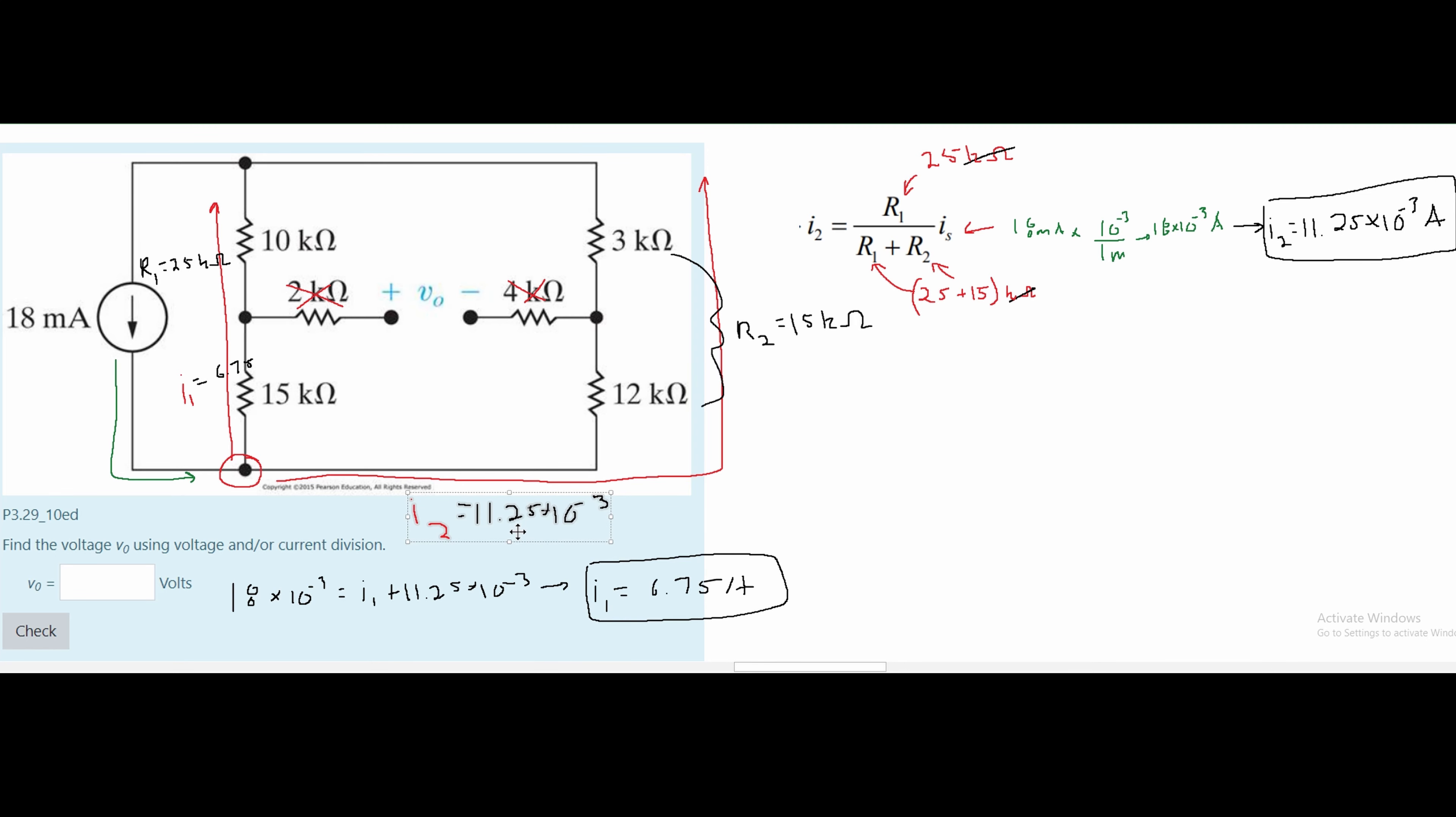This I2 is going to be with this resistor right here. It's also going to be with this 3kohm resistor because it's in series and current stays the same in series throughout.